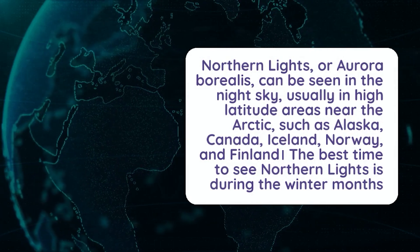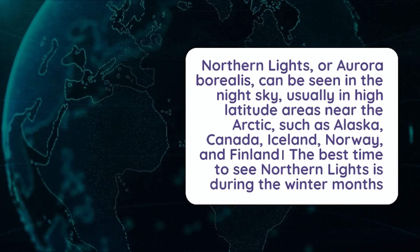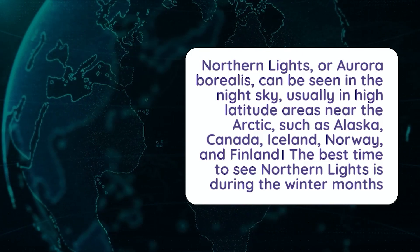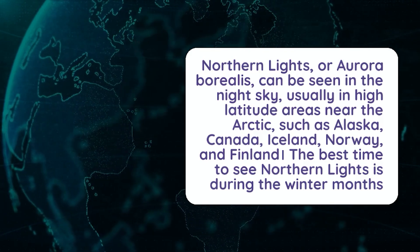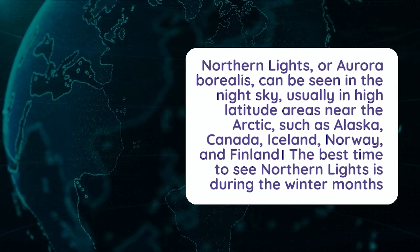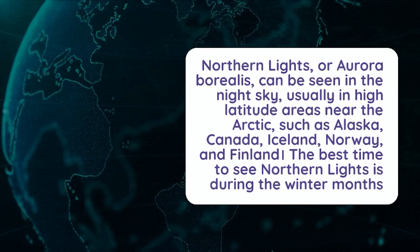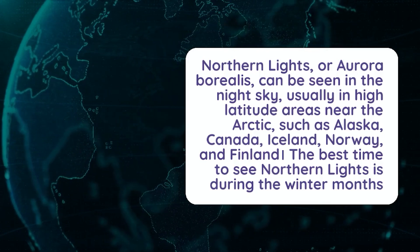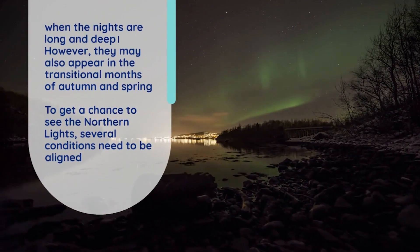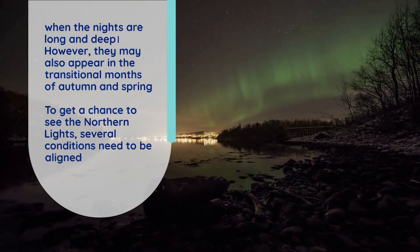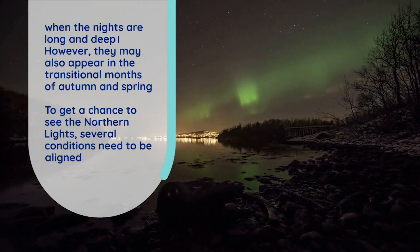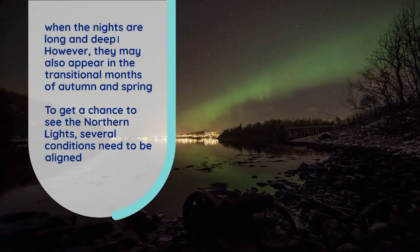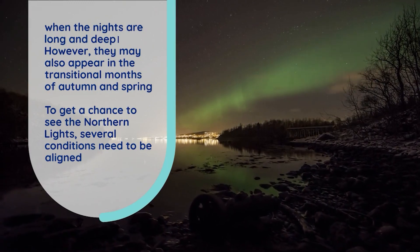Northern Lights, or Aurora Borealis, can be seen in the night sky, usually in high latitude areas near the Arctic, such as Alaska, Canada, Iceland, Norway, and Finland. The best time to see Northern Lights is during the winter months when the nights are long and dark. However, they may also appear during the transitional months of autumn and spring. To have a chance to see the Northern Lights, several conditions need to be aligned.